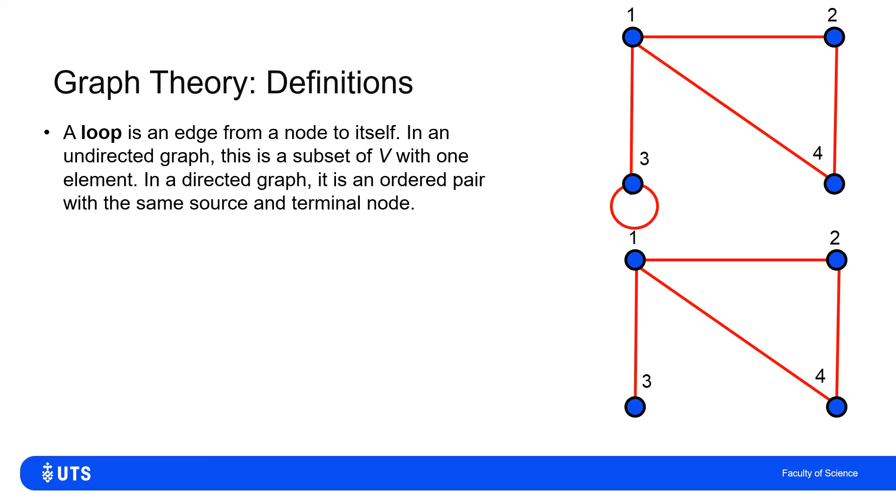So in which case, the subset of V has only got one element, rather than two elements in the subset. If it's a directed graph, then that element will appear twice in the ordered pair. It will be both the source node and the terminal node.